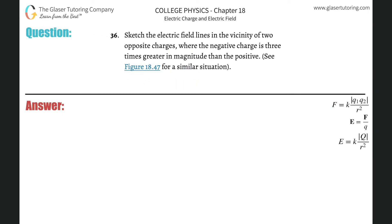Number 36: sketch the electric field lines in the vicinity of two opposite charges where the negative charge is three times greater in magnitude than the positive.